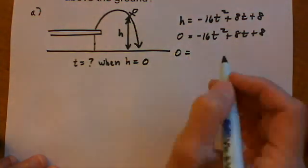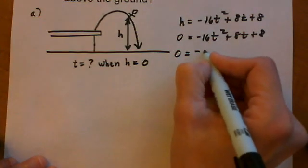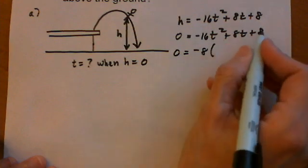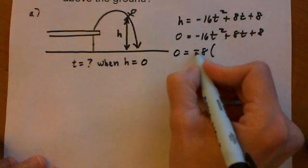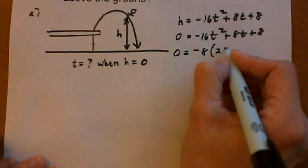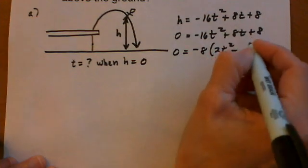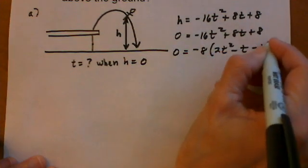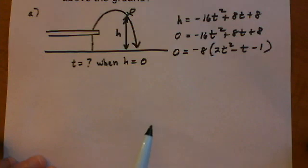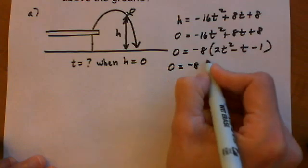So first we'll factor out the GCF. And negative 8 comes out. And remember, every term will switch signs because we took out a negative. So now we get 2t squared minus t minus 1. Now we have a trinomial to factor.